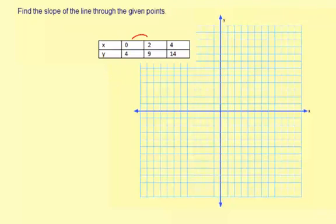From 0 to 2, you're increasing by 2, so plus 2. From 2 to 4, also plus 2. Now for the y's: from 4 to 9, you're adding 5, and from 9 to 14, you're adding 5.